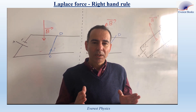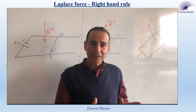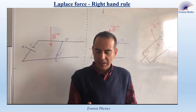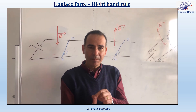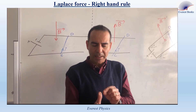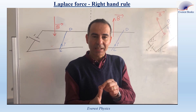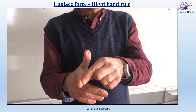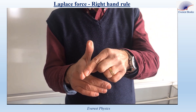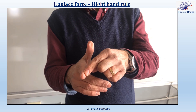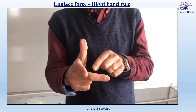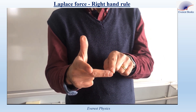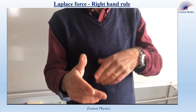To determine the direction of this force, we use the right hand as shown. The thumb of your right hand points in the sense of the current. The index finger points in the direction of the magnetic field, and the middle finger points in the direction of the Laplace force.